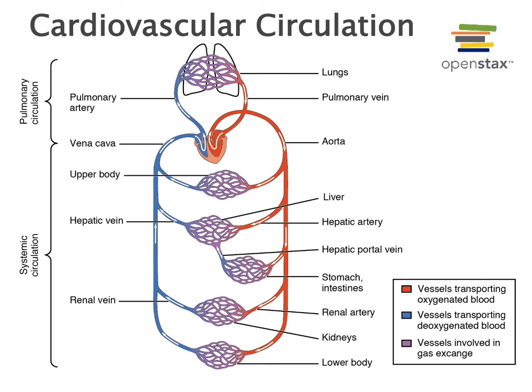The heart functions as a pump driving blood flow through the blood vessels. With each contraction, blood forced into the arteries causes an increase in blood pressure inside the arteries. Blood then flows from an area of high pressure to low pressure — from the elastic arteries into muscular arteries, then into arterioles and capillaries, then from the capillaries into lower-pressured veins that drain into the atria of the heart where pressure is the lowest.